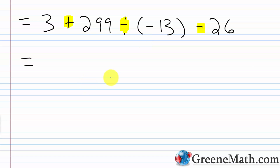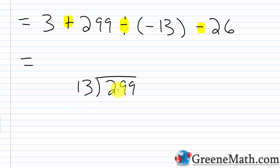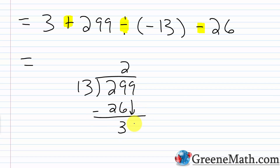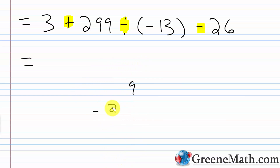13 goes into 29 twice. 2 times 13 is 26. Subtracting, we get 3. Bring down the 9. 13 goes into 39 exactly 3 times. 3 times 13 is 39. Subtracting, get 0. So we're going to get negative 23.